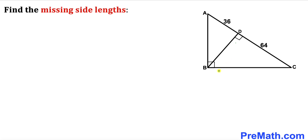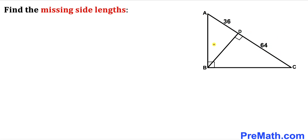Welcome to PreMath. In this video we have a right triangle ABC such that BD is perpendicular to side AC. Furthermore, segment AD is 36 and segment CD is 64. Our task is to calculate the missing side lengths AB, BC, and BD.